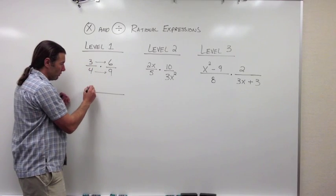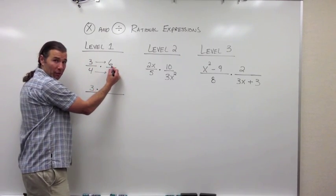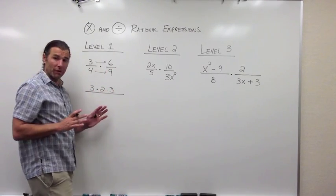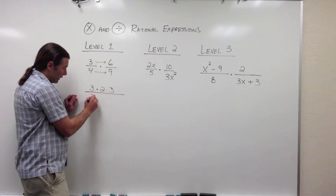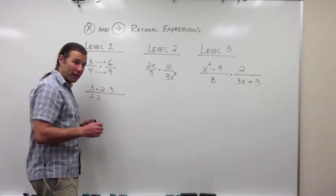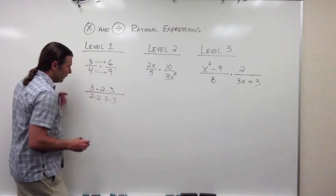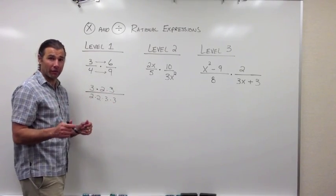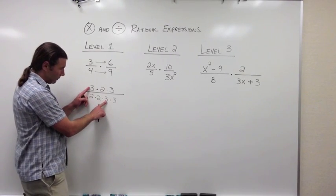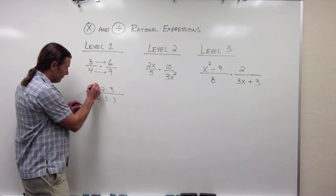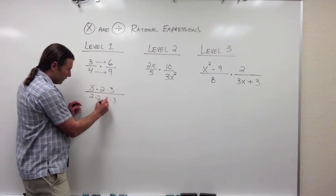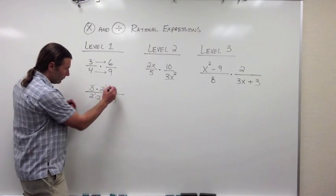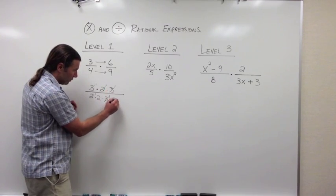3 is a prime number, so I'll just write that down. 6, however, is not prime — if I factor 6, I get 2 times 3. Now I'll do the same thing in the denominators. With 4, I'll write that as 2 times 2, and with 9, I'll write that as 3 times 3. Now, looking at everything factored, I can see a common factor of 3 in the numerator and denominator, so I divide that out, leaving a 1. I also have a common factor of 2, and finally another common factor of 3.